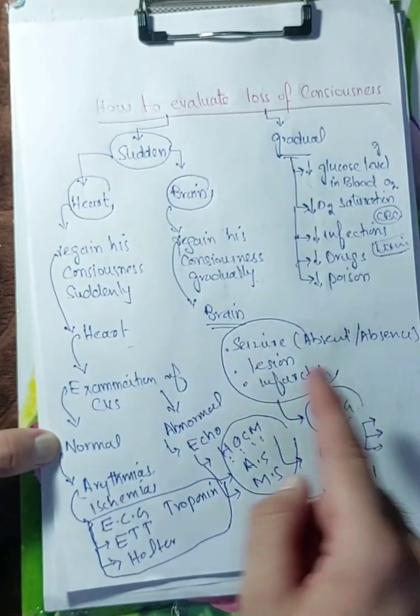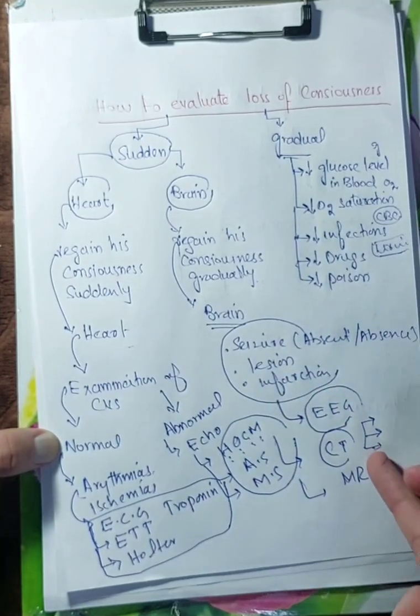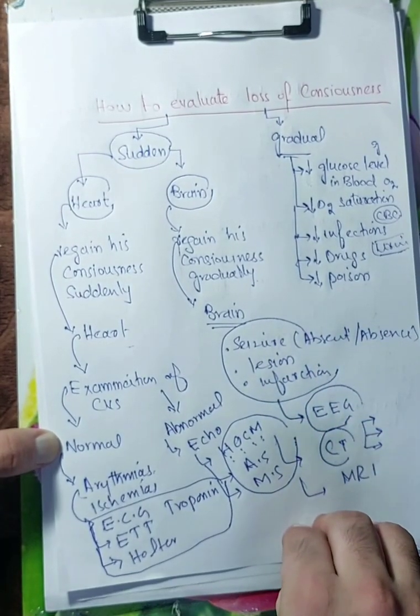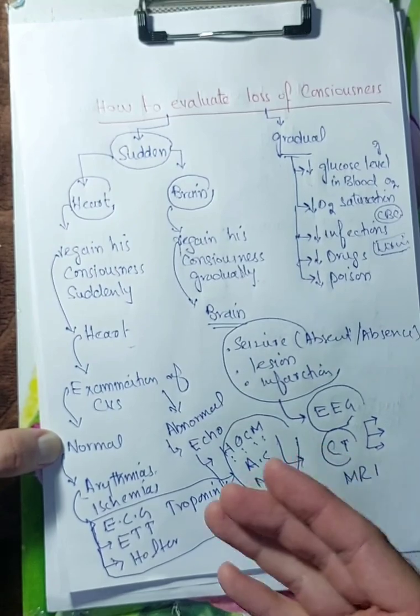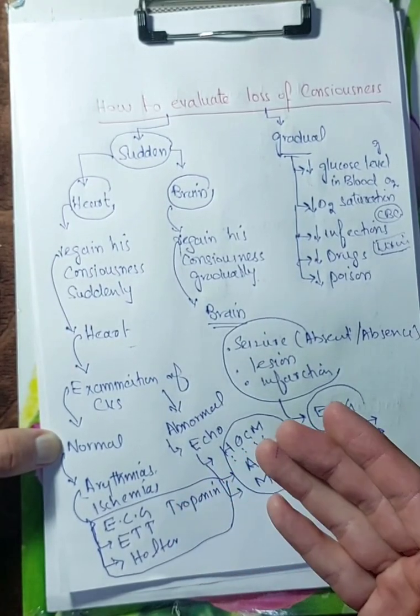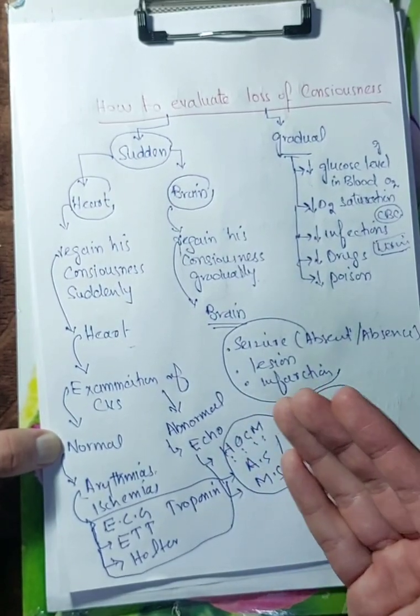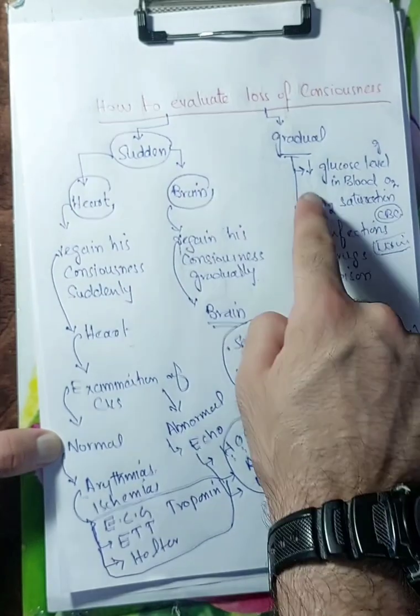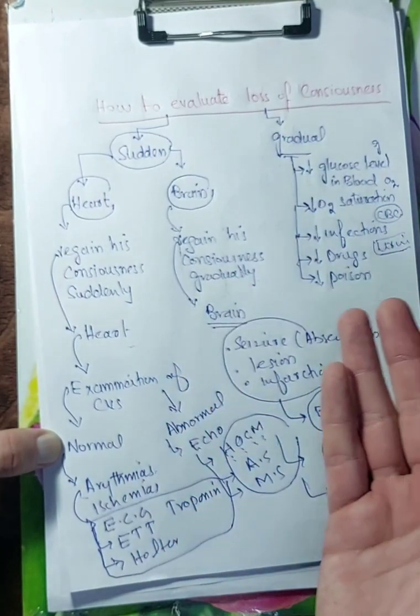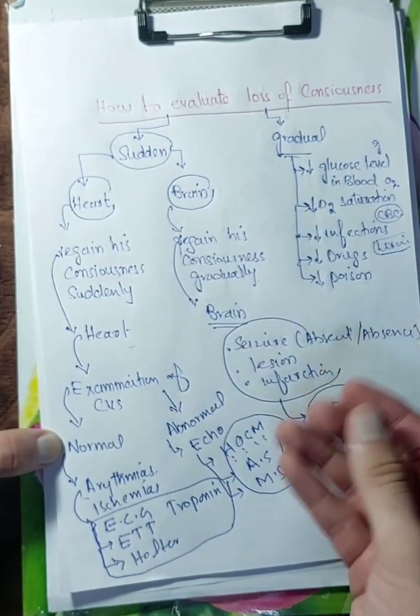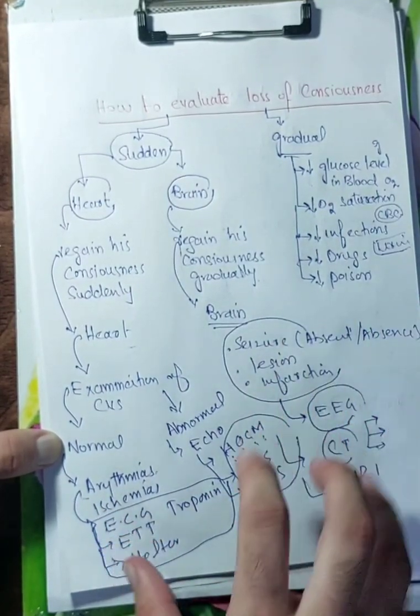The brain, the mind will be affected, legion or mass. You will do EEG, CT brain, or MRI to understand the pathology. And I mentioned gradual - if a person lost consciousness gradually, over time they became unconscious. First they were okay, then their condition deteriorated, then they became unconscious. You will check glucose level in blood, oxygen saturation, CBC for infection, whether they took drugs, whether they took poison.